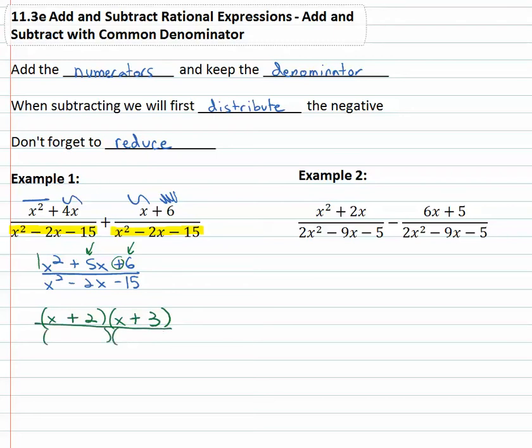In the denominator x squared is x times x and again because we have a 1 in front we want to multiply to negative 15 different signs this time and add to negative 2. Well 15 is 5 times 3 and if the 5 is negative and the 3 is positive we get that middle term like we wanted. And as it turns out this one does reduce. The x plus 3's do divide out which leave us with just x plus 2 over x minus 5 for our final solution.